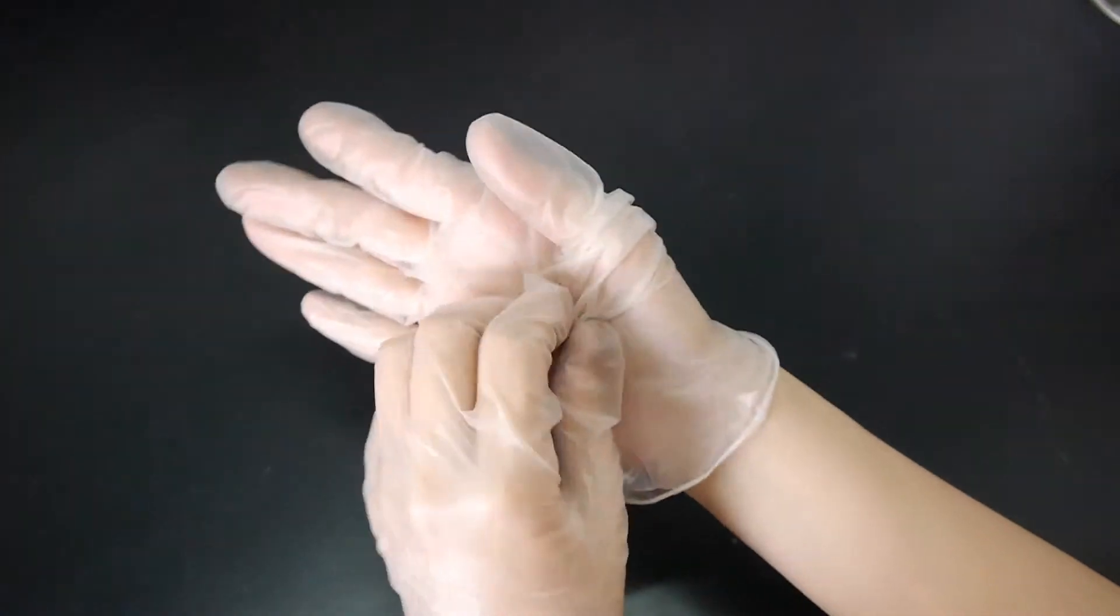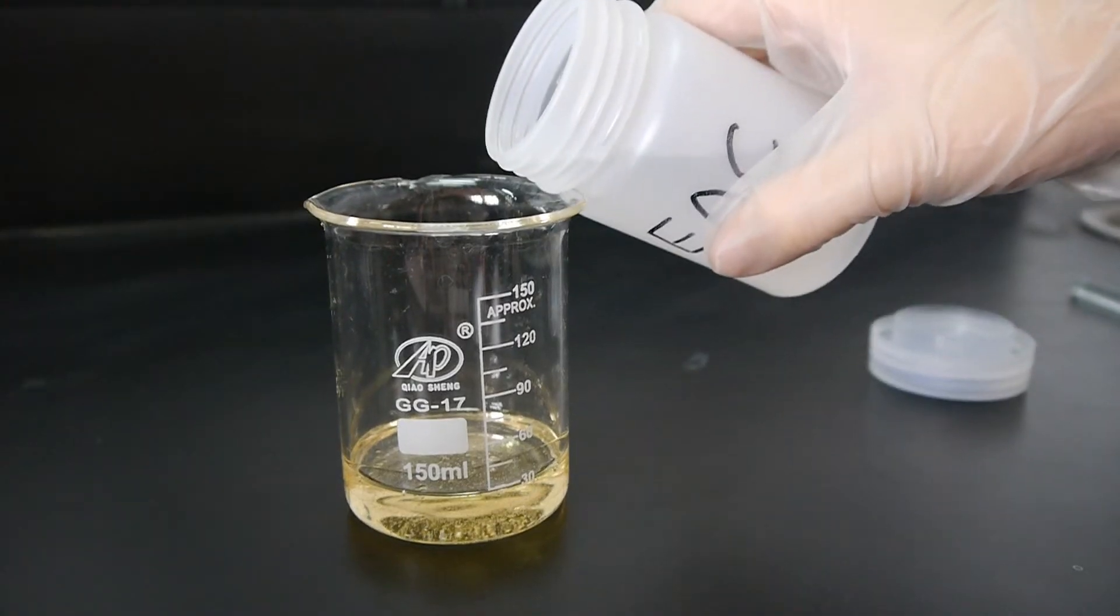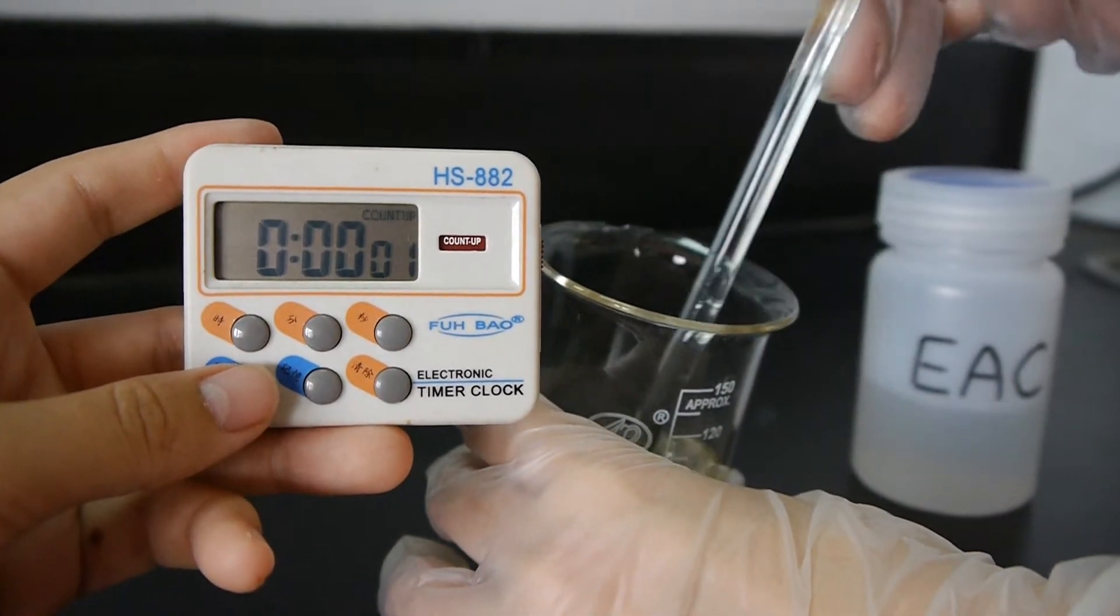Now, we would like to test different kinds of solvent solubility with adhesive. We add 30 grams of solvent and 30 grams adhesive and stir it, using a timer to calculate the dissolving time.